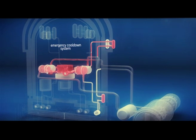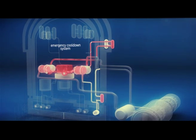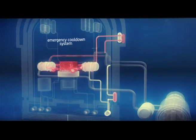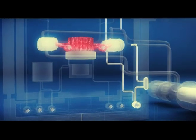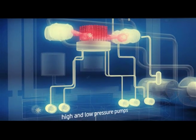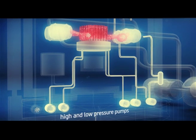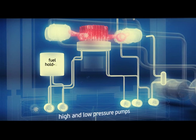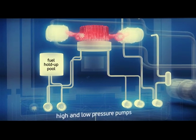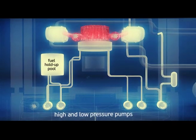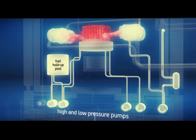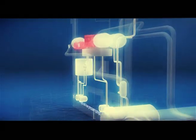In case the primary circuit is damaged, high and low pressure pumps are actuated to ensure continuous water supply to cool the reactor. They supply water from the spent fuel holdup pond located within the containment and from the containment sump. If the leak is small and high pressure is maintained in the circuit, high pressure pumps operate. If the leak is large, for instance in case of a pipeline break, and pressure is dropping, low pressure pumps are engaged.